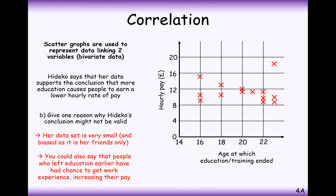You could also say that those who left education earlier have had a chance to build up work experience, increasing their pay. It depends on what age the data was collected. If all people were 40 years old, you'd expect those who left education earlier to have a higher pay rate. If data was taken at age 22, the 16-year-olds who left education would have had six years to build work experience, so you'd naturally expect them to earn more per hour. If we were to delete one outlier data point, we'd likely see just a flat or even positive correlation — very few points are making a considerable difference here.